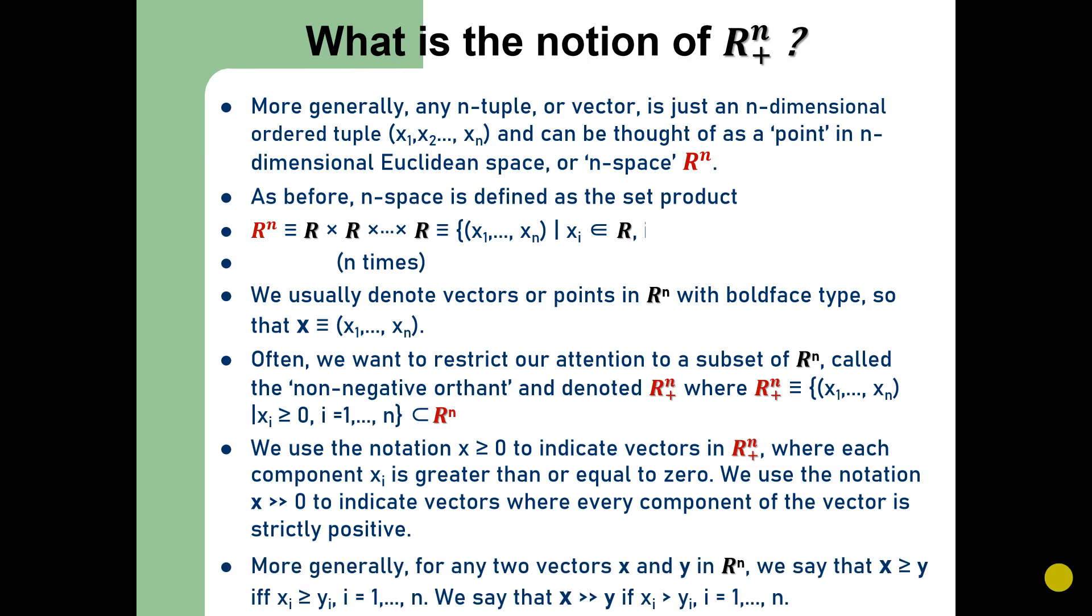More generally, for any two vectors x and y in n-dimensional Euclidean space R^n, we say that vector x ≥ y if and only if xᵢ ≥ yᵢ where i varies from 1 to n. We say that x is strictly greater than vector y if xᵢ > yᵢ where i varies from 1 to n.